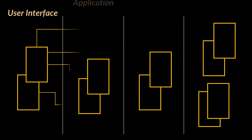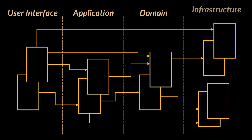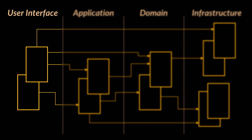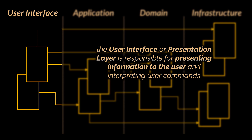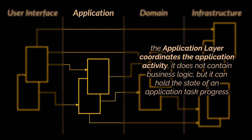A common architectural solution for domain-driven designs, which we already discussed in our very first DDD video, contains four conceptual layers. The user interface or presentation layer is responsible for presenting information to the user and interpreting user commands. The application layer coordinates the application activity — it does not contain business logic and does not hold the state of the business objects.